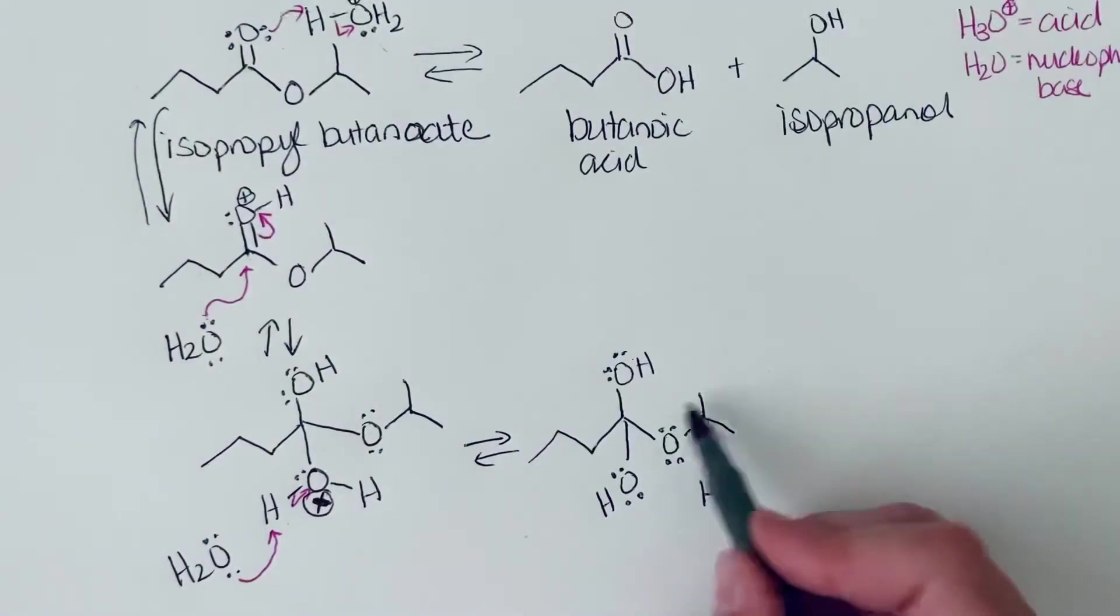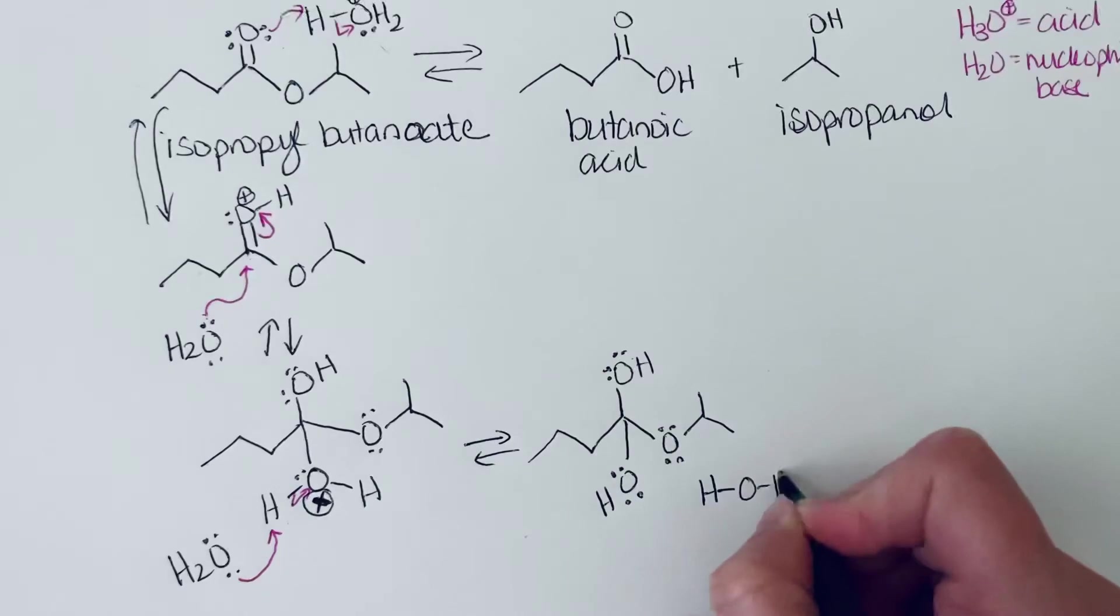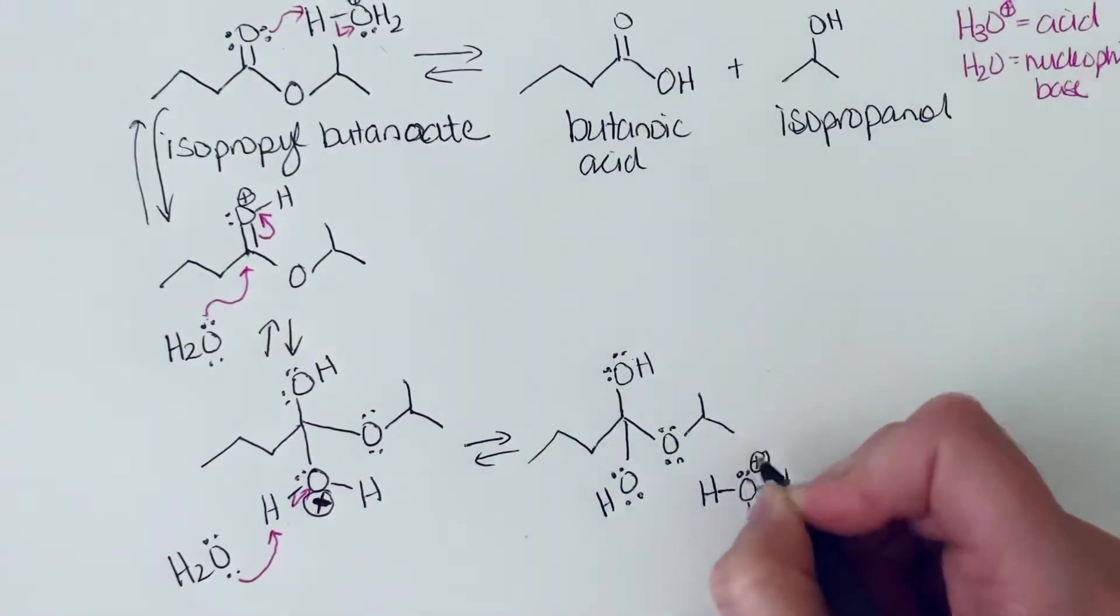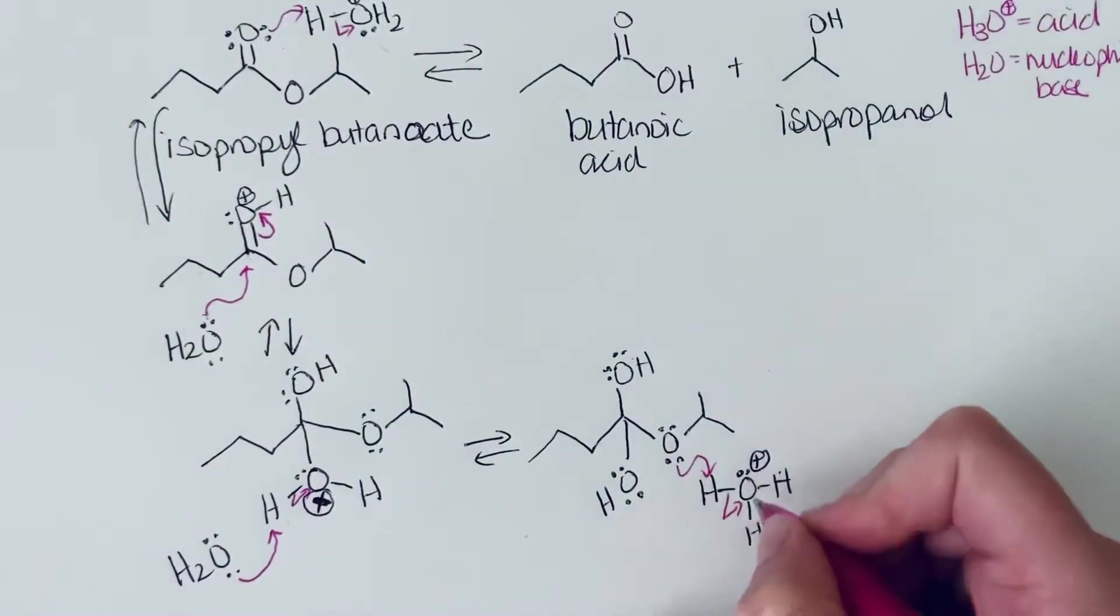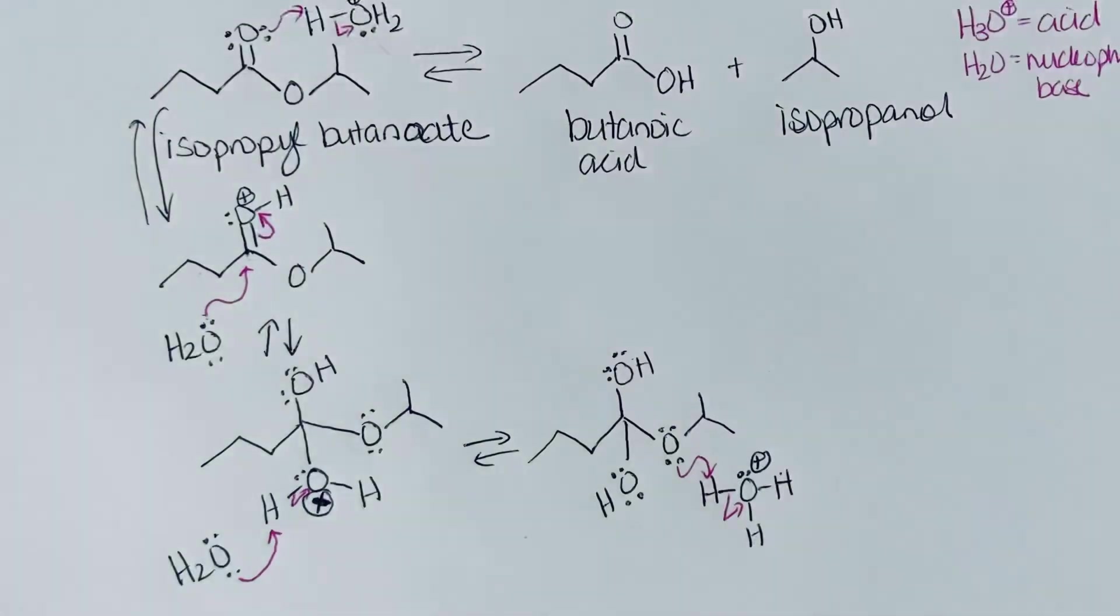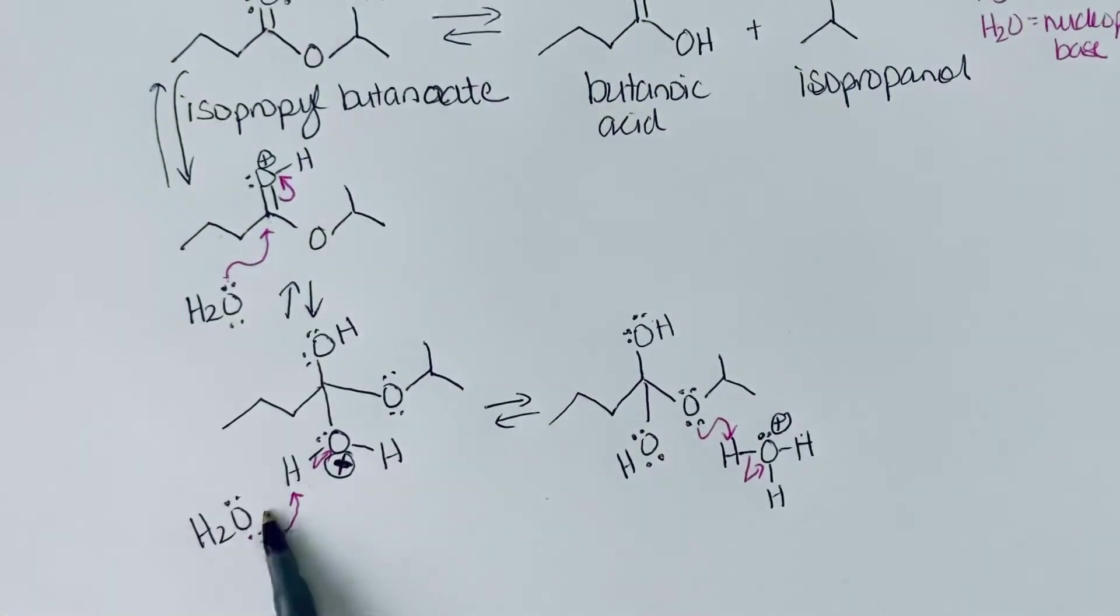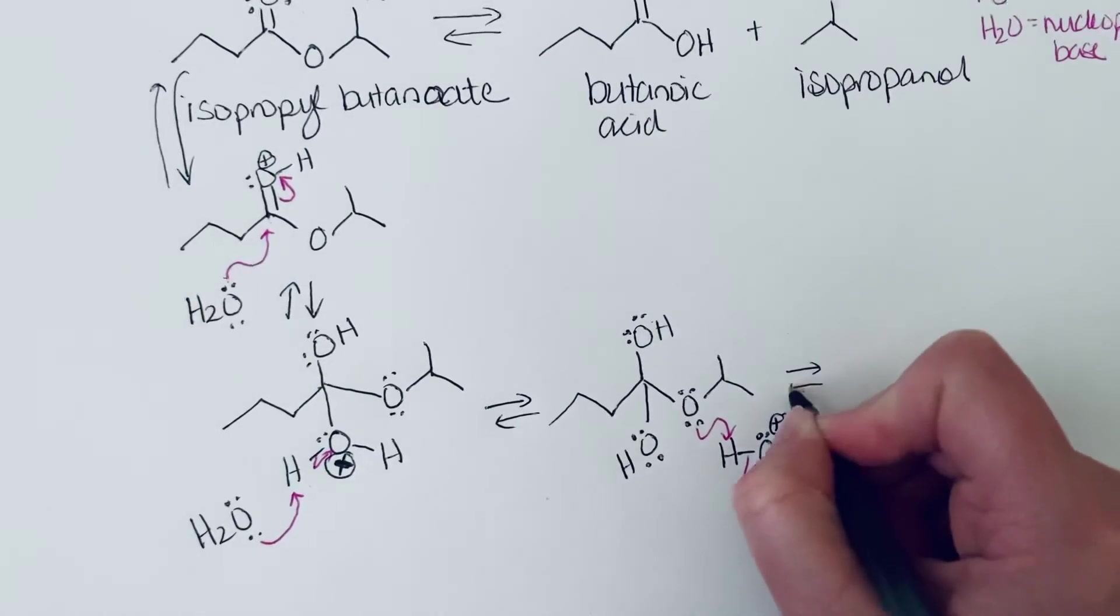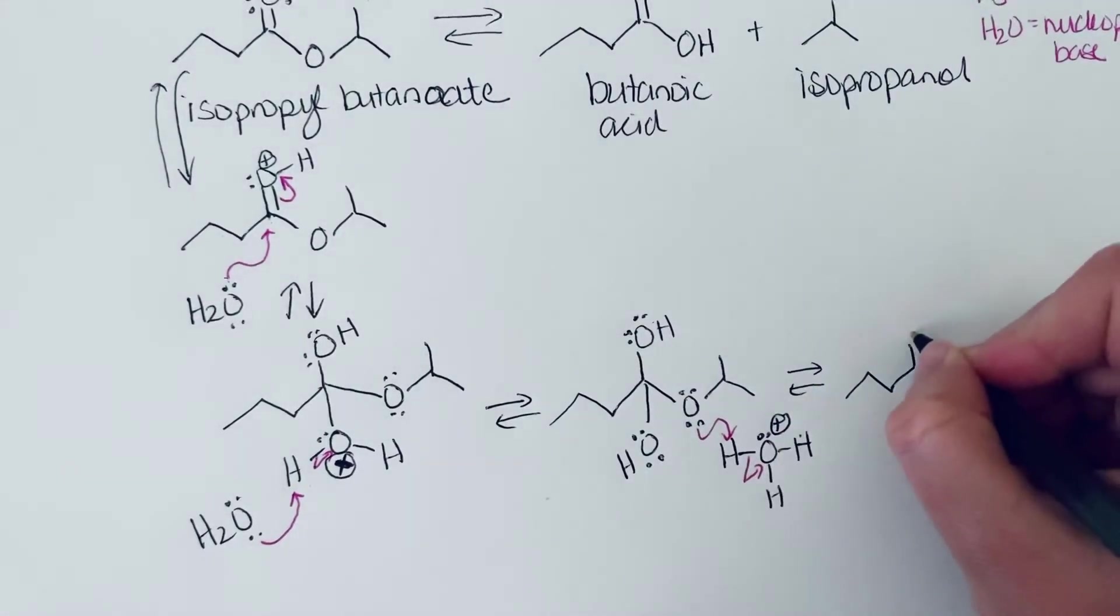So with that being said, now we're trying to make this isopropoxy group into a good leaving group. So it can leave as the neutral alcohol. So the acid that we have available is H3O+. So we are going to take a hydrogen from there. And so we've used our acid here. But then we regenerated here. We're using it again here. And we will see that we regenerated again later on. So it truly is a catalyst.